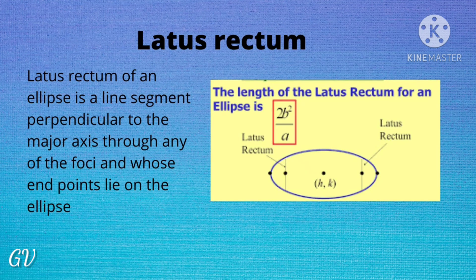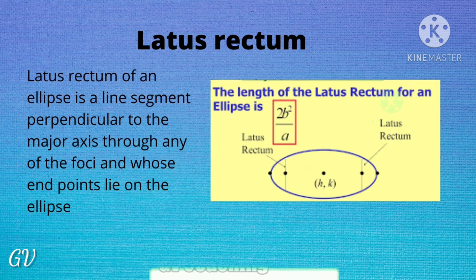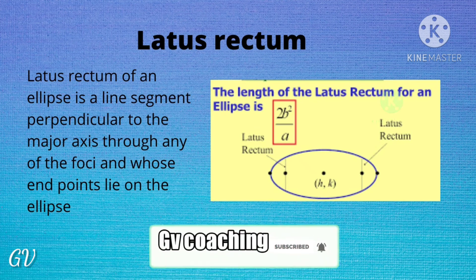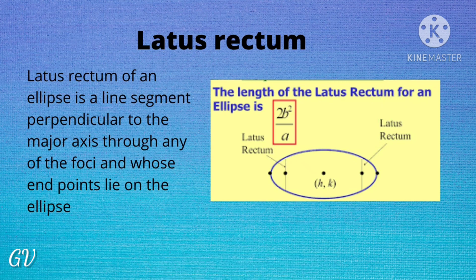The latus rectum of an ellipse is a line segment perpendicular to the major axis, passing through any one of the foci, whose end points lie on the ellipse. There are two latus recta in an ellipse. The length of the latus rectum is given by the formula 2b²/a.